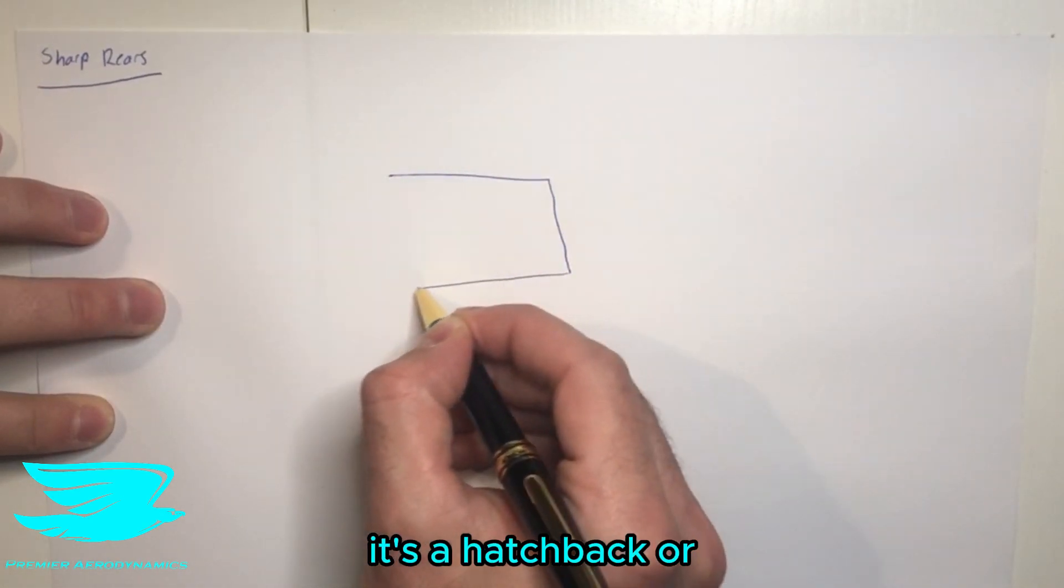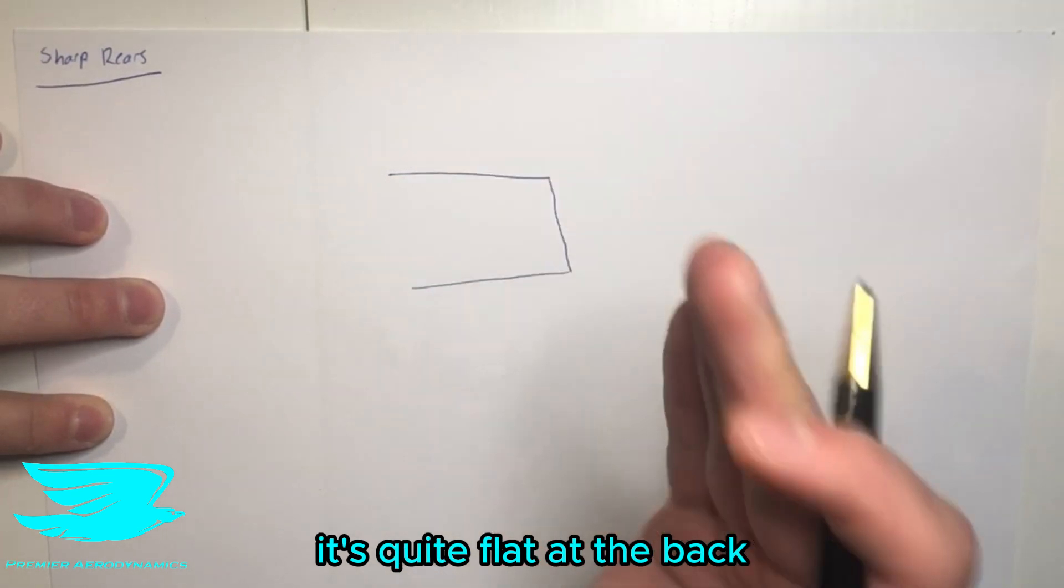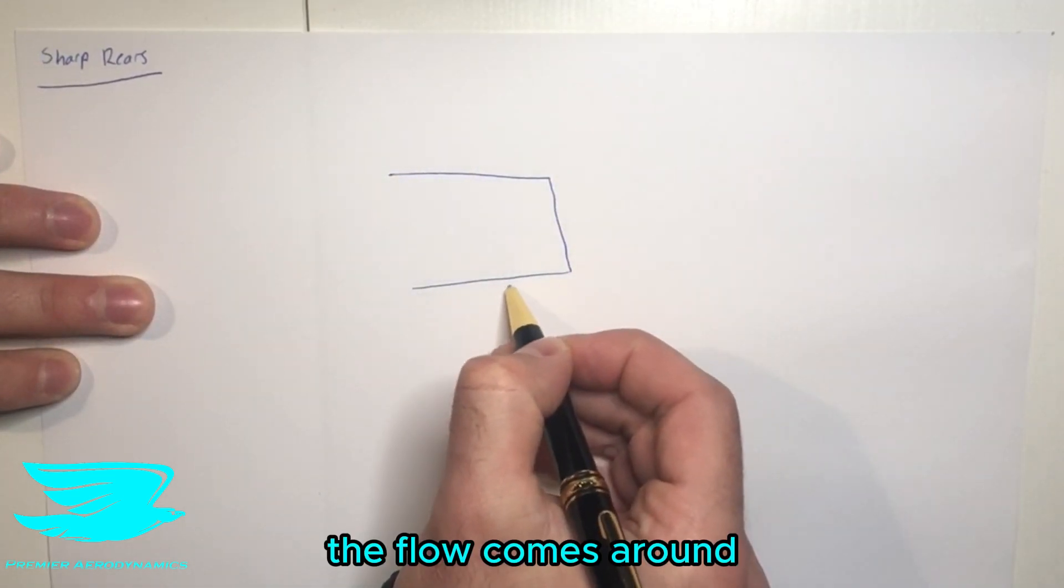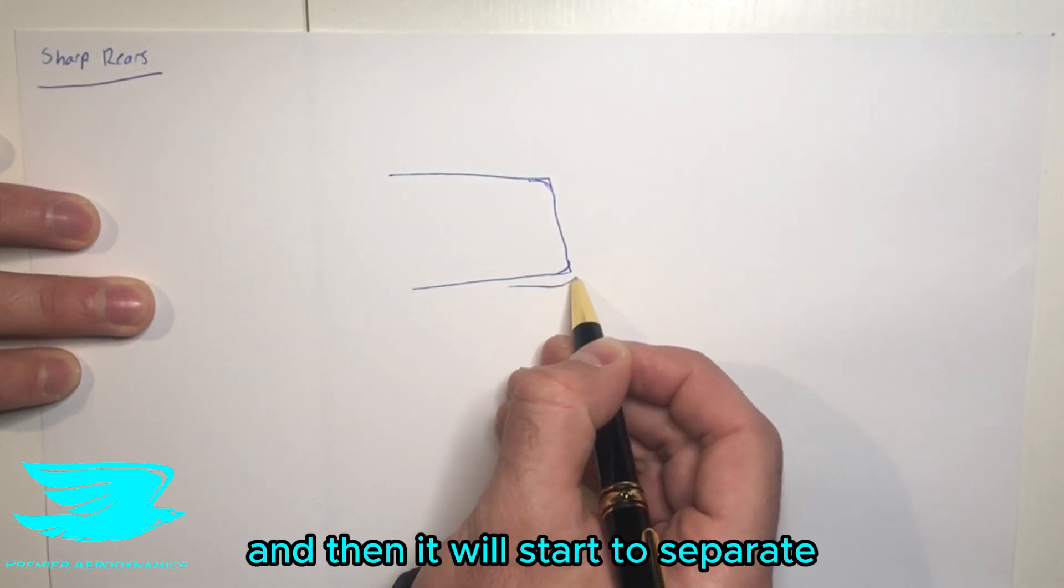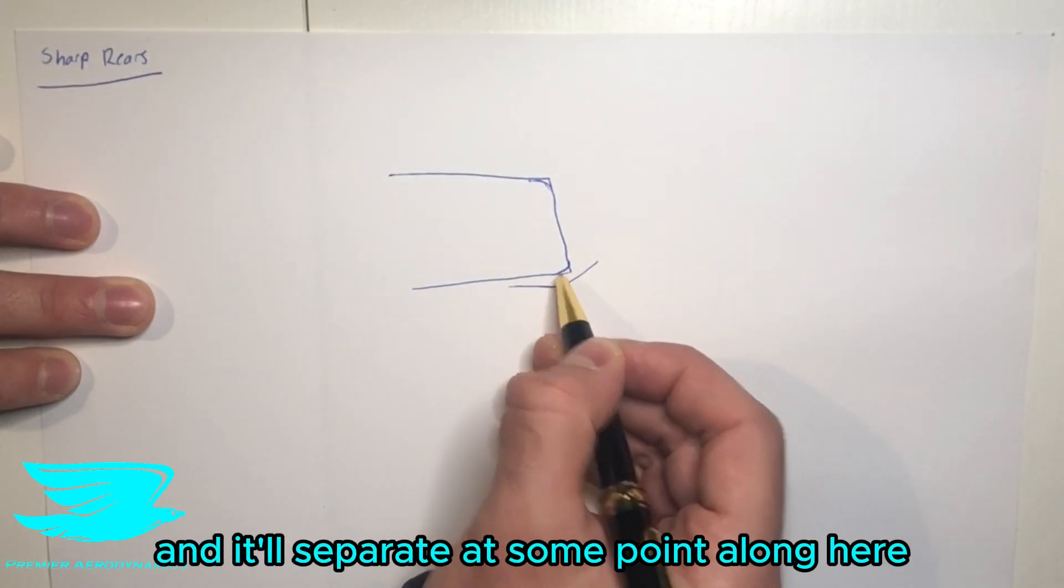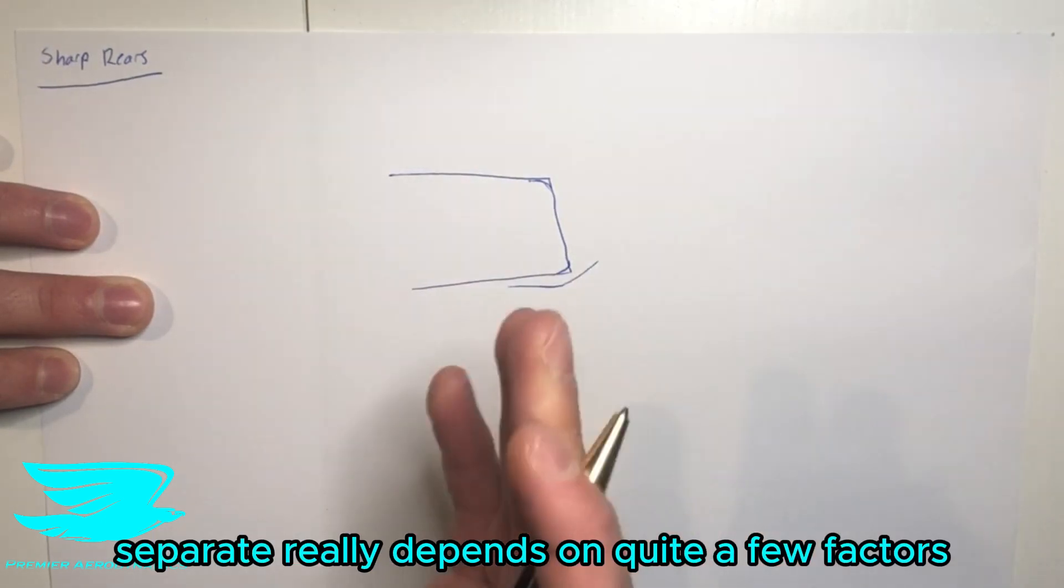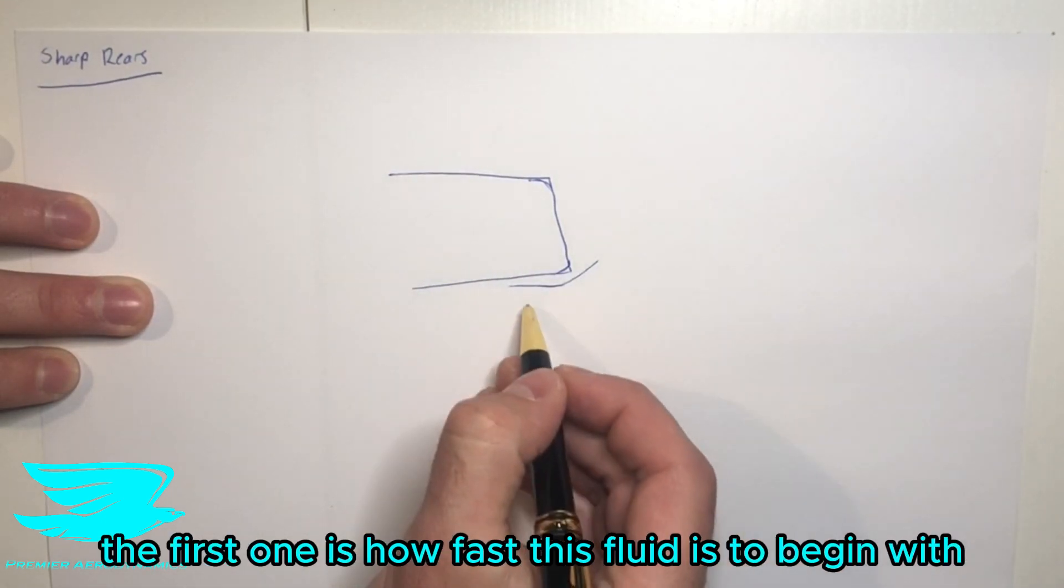It's a hatchback, quite flat at the back. The flow comes around, and if these edges are rounded, it will come here and then it will start to separate at some point along here. Now where it will separate really depends on quite a few factors. The first one is how fast this fluid is to begin with, secondly how rounded this is, thirdly what angle the flow is coming in at.